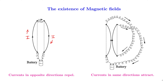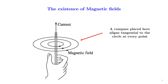Whereas, in the second case, if we have currents along the same direction, we will see that the two conductors attract each other. This force of repulsion or attraction is attributed to the presence of a magnetic field. If we have a current-carrying conductor, the presence of a magnetic field can be demonstrated by using a compass needle.